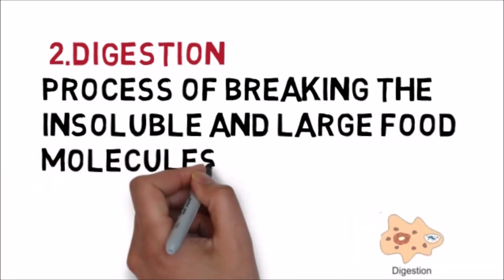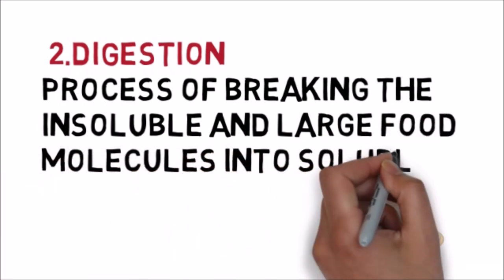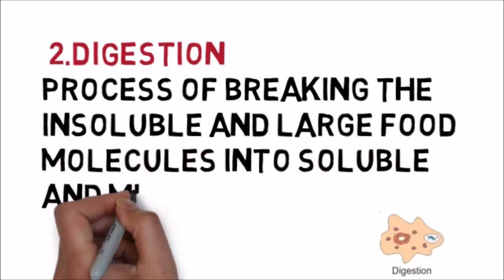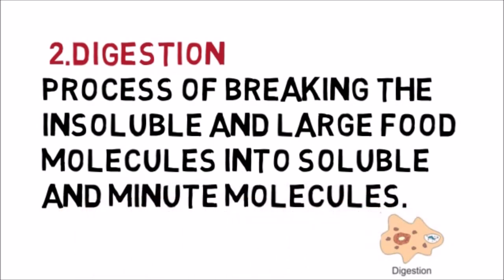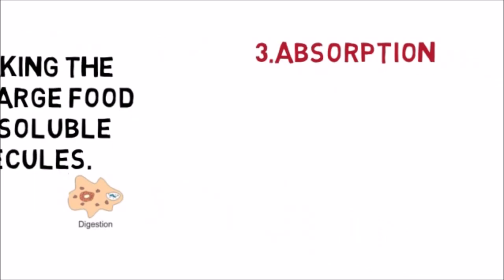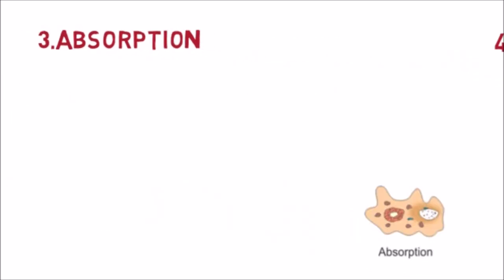The second process is digestion — the process of breaking large, insoluble food molecules into soluble and minute molecules. After ingestion, the food vacuole is transported inside the amoeba's cell, where many digestive enzymes break down large insoluble particles and convert them into simple molecules.